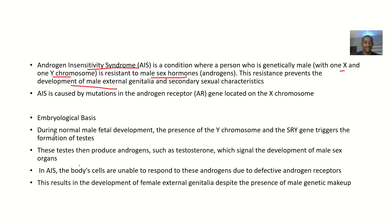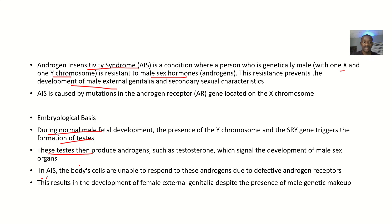The embryological basis involves things that went wrong during development leading to mutation in the androgen receptors. During normal male fetal development, the presence of the Y chromosome and the SRY gene triggers the formation of testes. These testes produce androgens such as testosterone, which signal the development of male sex organs. In androgen insensitivity syndrome, the body cells are unable to respond to these androgens due to defective androgen receptors, resulting in the development of female external genitalia despite a male genetic makeup.